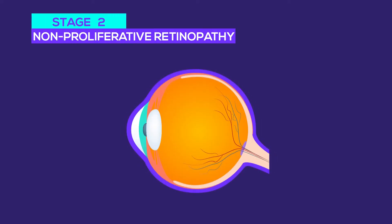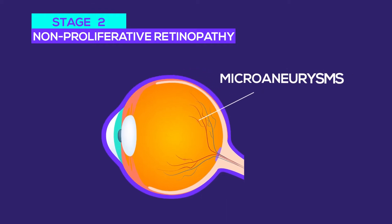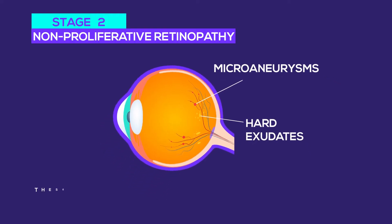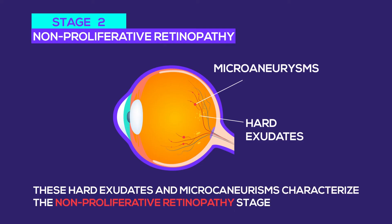The second stage is called non-proliferative retinopathy. In this stage, without the support of pericytes, walls of retinal blood vessels bulge out, creating microaneurysms. They appear as red dots in the retinal examination. When these microaneurysms rupture, it gives rise to small blot and dot hemorrhages. Lipids and proteins will leak through the damaged vessel walls and collect within the retina as hard exudates. These hard exudates and microaneurysms characterize the non-proliferative retinopathy stage.